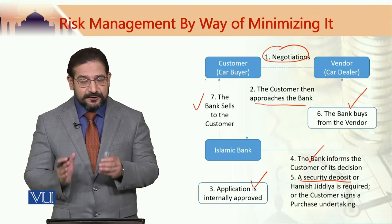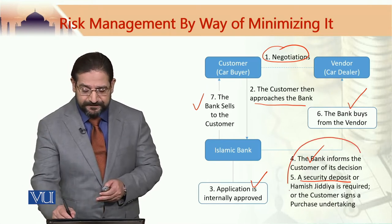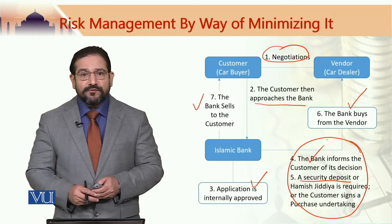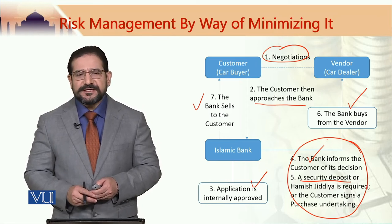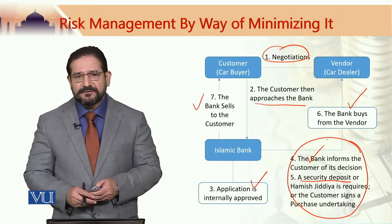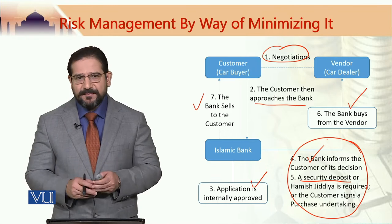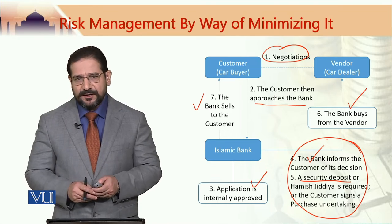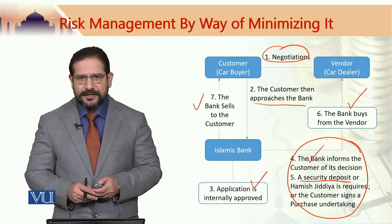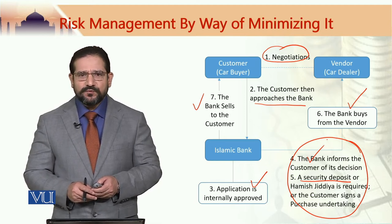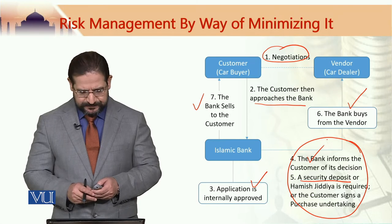Once this has been done, the bank would buy the car from the vendor and sell it on to the customer on a murabaha basis. Steps four and five are risk management measures in a banking murabaha transaction. This would not eliminate the risk altogether, but rather minimize it.